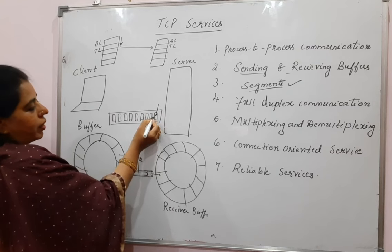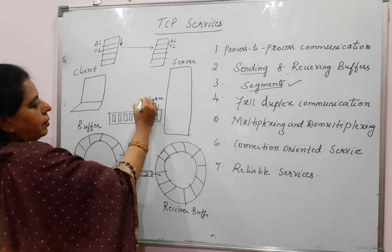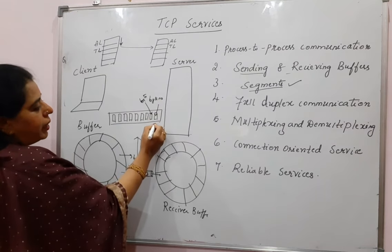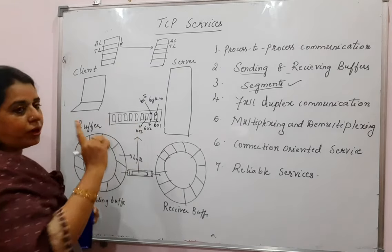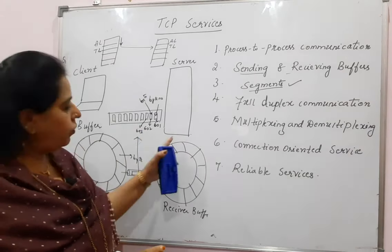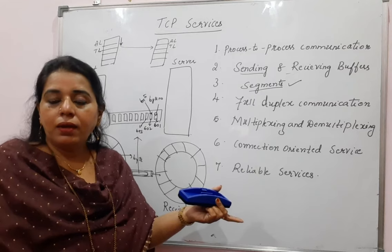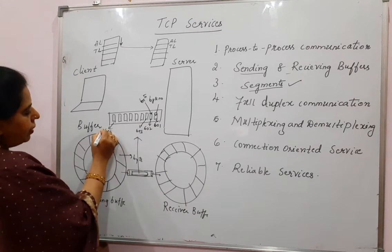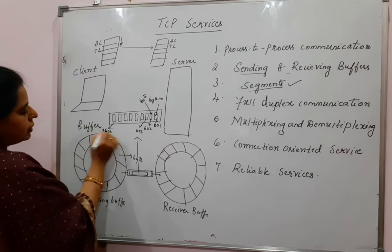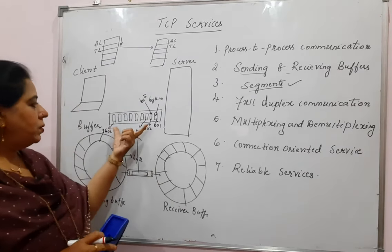Each of the bytes has a byte number assigned to it. Every byte will have some number. If the first byte number is 601, the second will be 602, the third will be 603, and so on. If a segment carries 1000 bytes and the first byte number is 601, then the last byte number will be 1601, because the segment carries 1000 bytes. This is the concept of the segment.